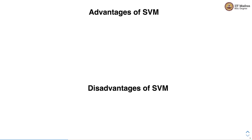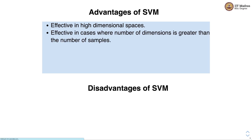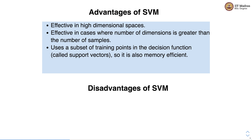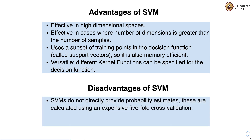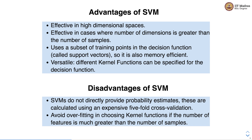Some advantages of SVM: it is effective in high-dimensional spaces, even when the number of dimensions is greater than the number of samples. It uses only a subset of training points (support vectors) in the decision function, making it memory efficient. It is also versatile, as different kernel functions can be specified. Disadvantages include: SVM does not directly provide probability estimates — these are calculated using expensive five-fold cross-validation. It can also avoid overfitting when choosing kernel functions if the number of features is much greater than the number of samples. In this video, we studied how to implement SVM with the sklearn library.